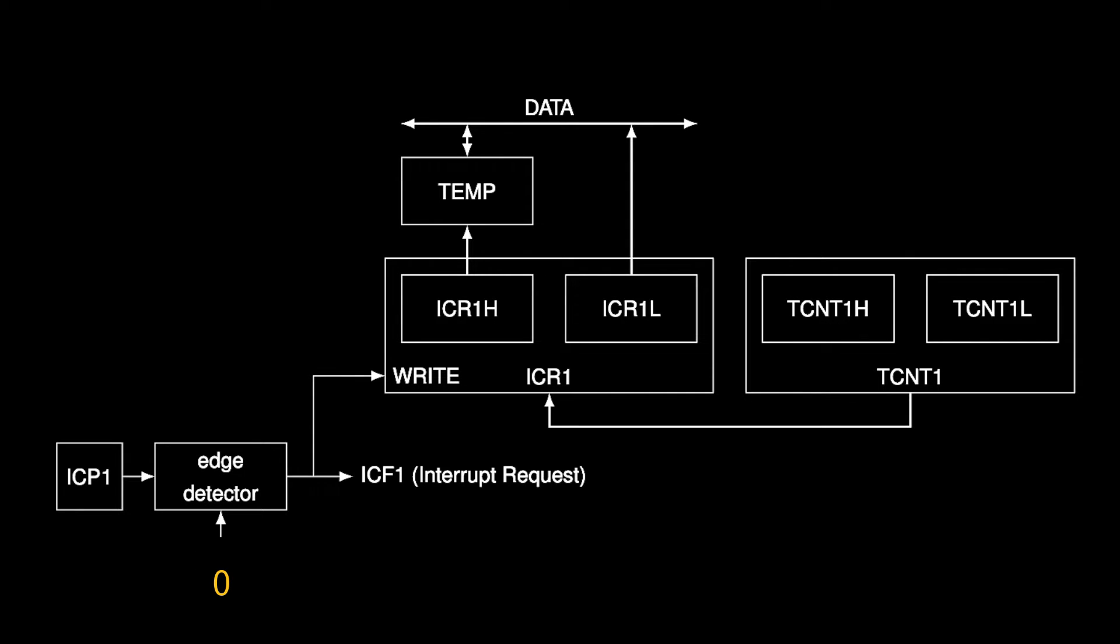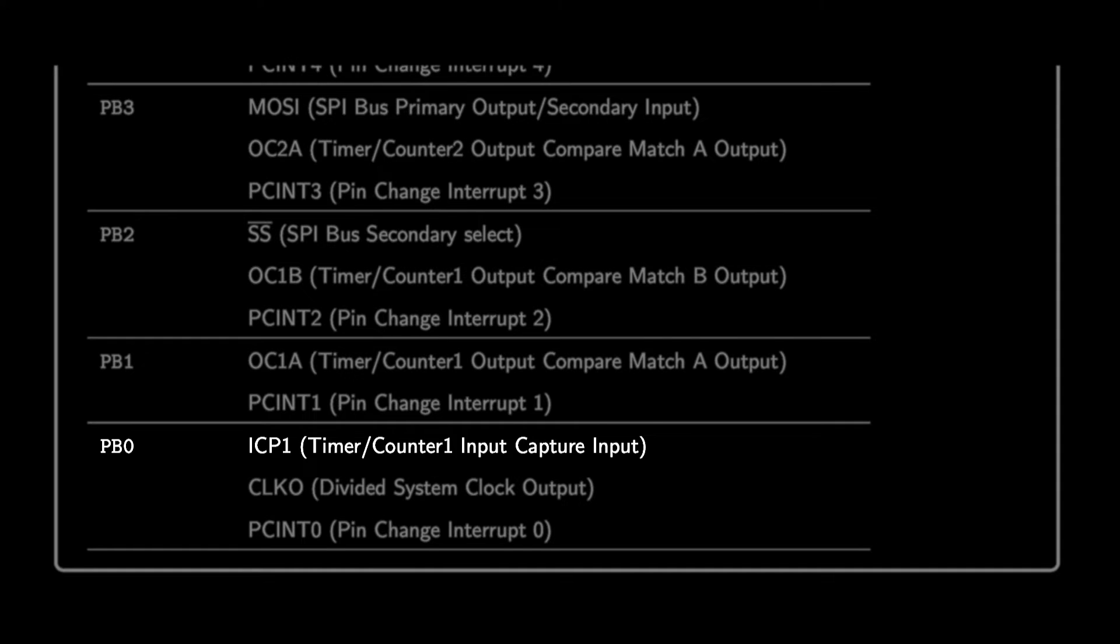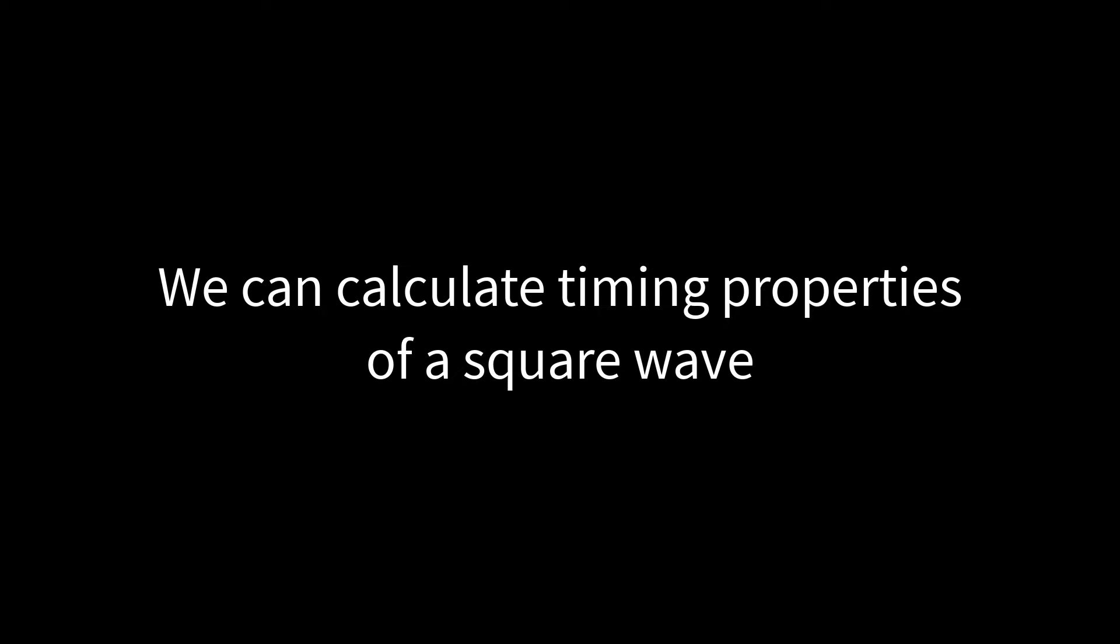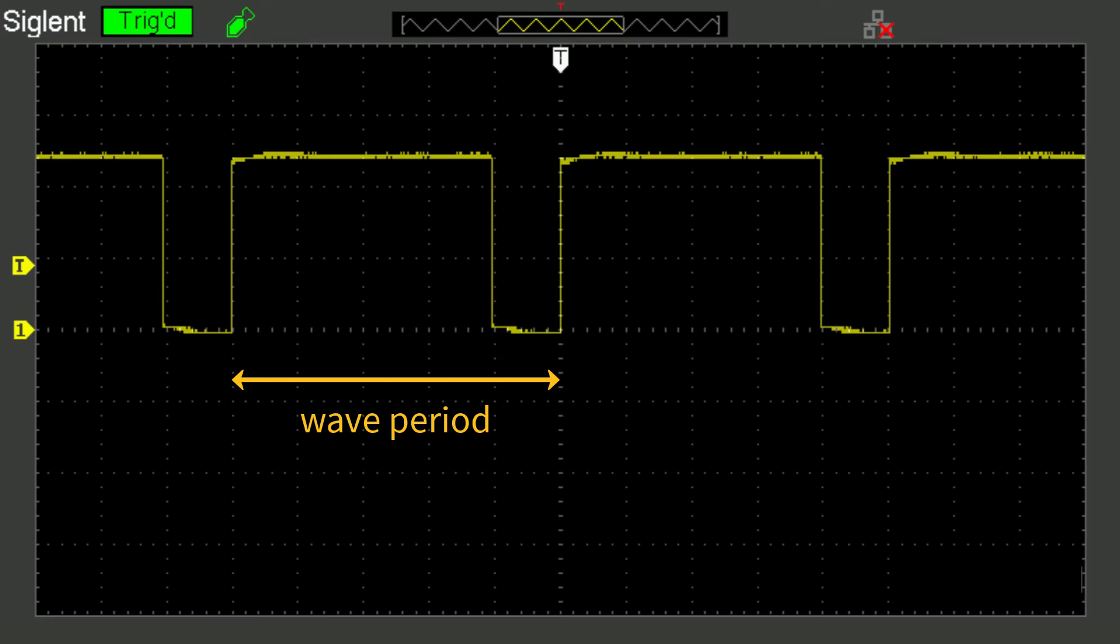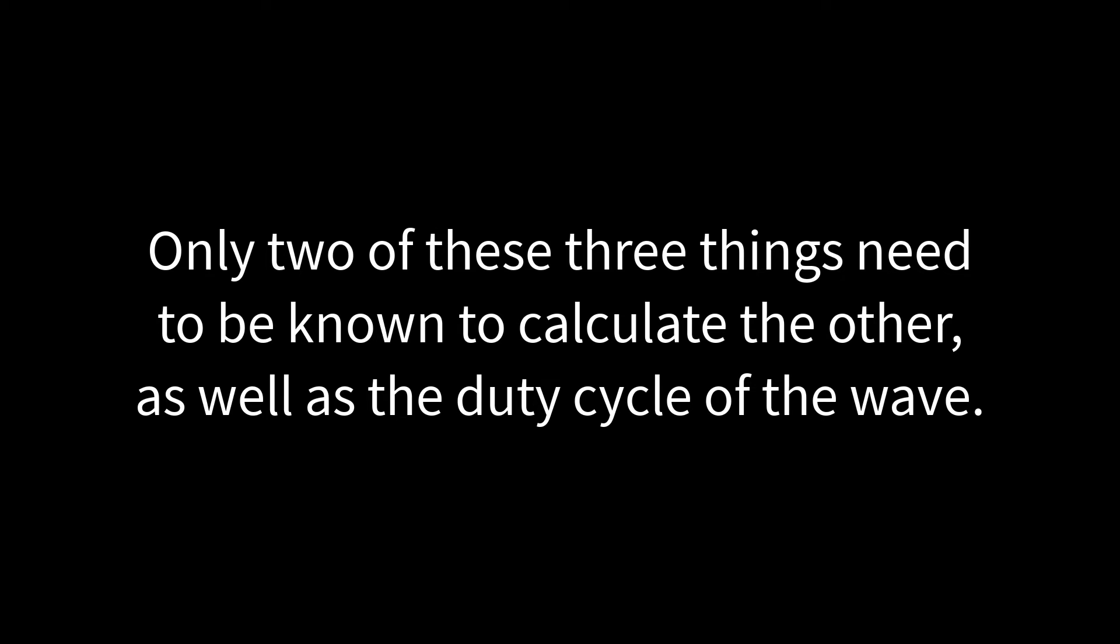When ICES has a value of 0, the input capture unit will trigger on a falling edge on pin ICP1. On the ATMEGA 328P, ICP1 is PB0, pin 0 on port B. In this manner, the input capture unit can be used to calculate information about a square wave: the period of the wave, the high period of the wave, and the low period of the wave. When we know any two of these three things, we can calculate the third thing, as well as calculate the duty cycle of the wave.